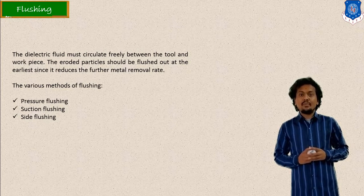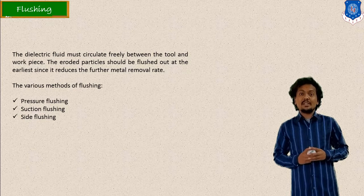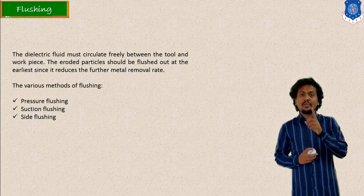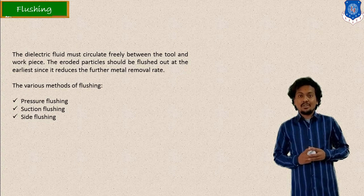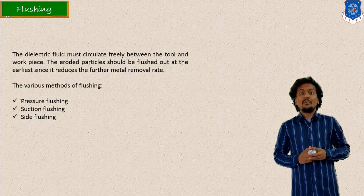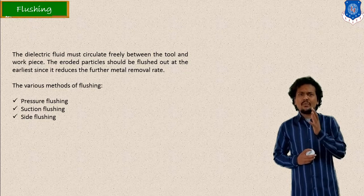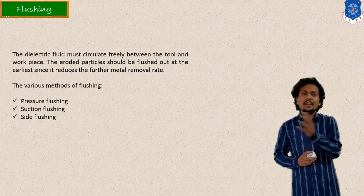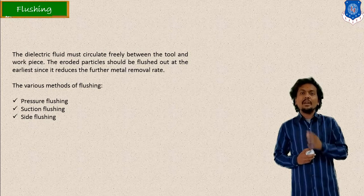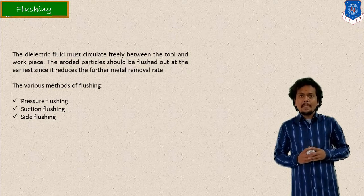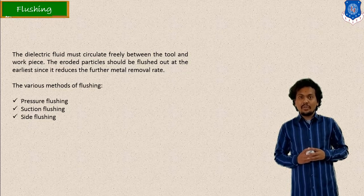What happens in flushing? Flushing is very important in electro-discharge machining. Dielectric fluid is used in this process, and that's why flushing is required for this dielectric fluid. Flush means to carry away or flow the liquid away from a particular zone. So, flushing is important for the dielectric fluid.